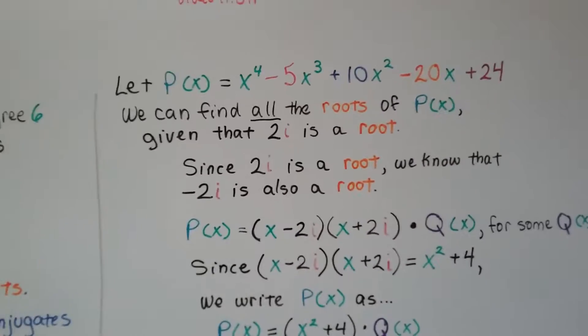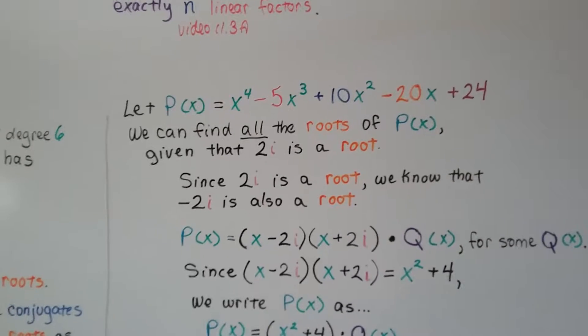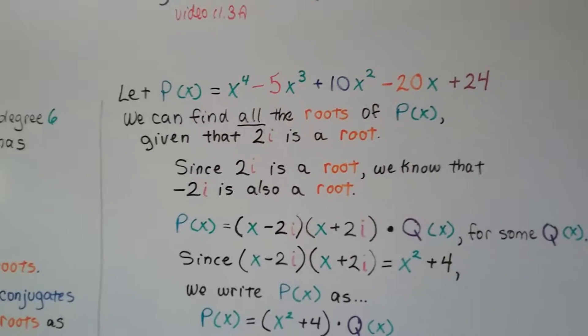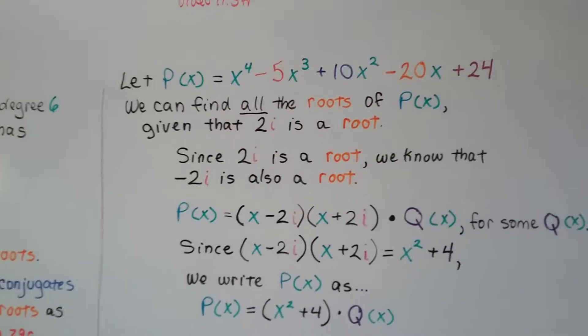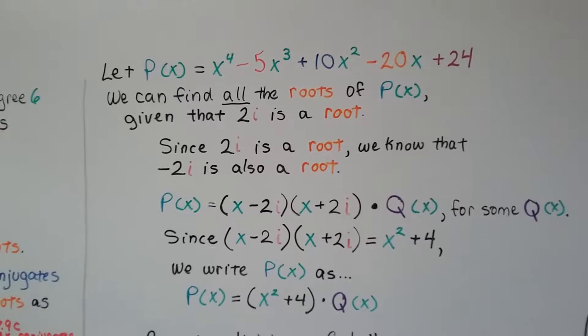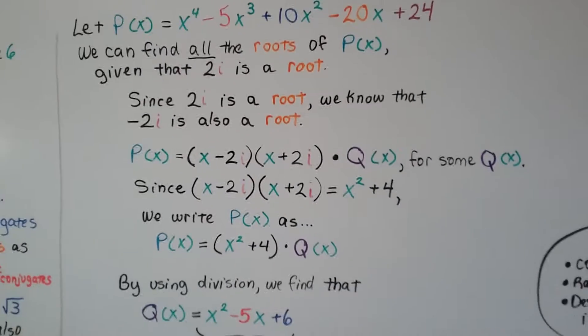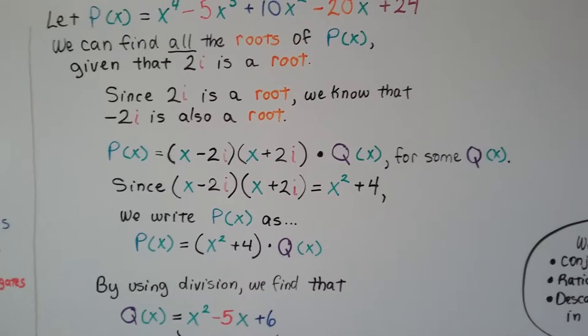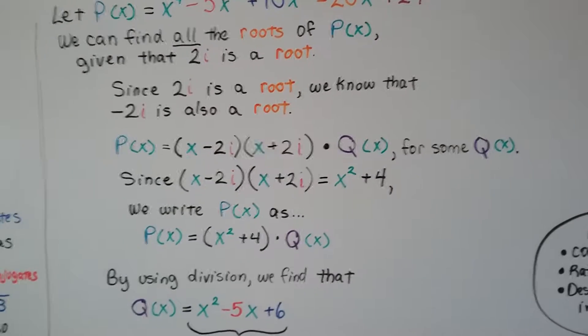Now let's let p of x equal x to the 4th minus 5x to the 3rd plus 10x squared minus 20x plus 24. We can find all the roots of p of x given that 2i is a root. Since 2i is a root, we know that negative 2i is also a root. And p of x equals x minus 2i times x plus 2i times q of x for some quotient q of x.